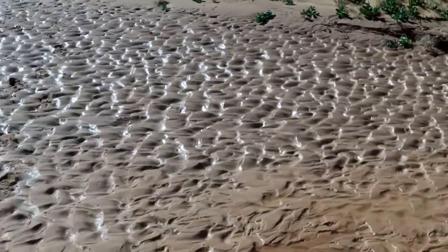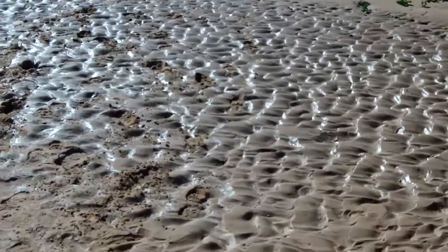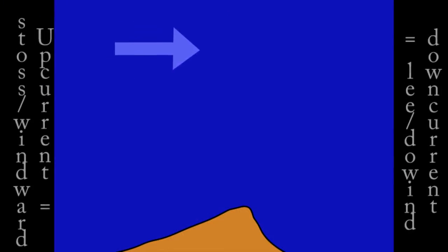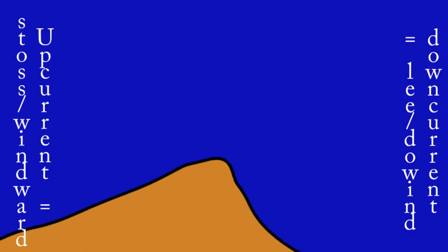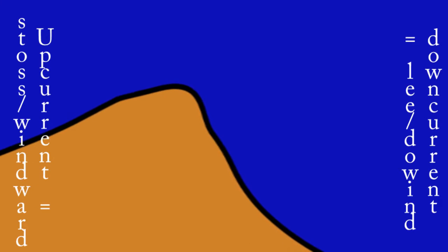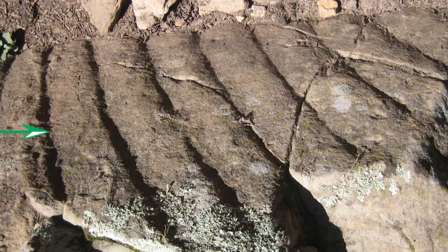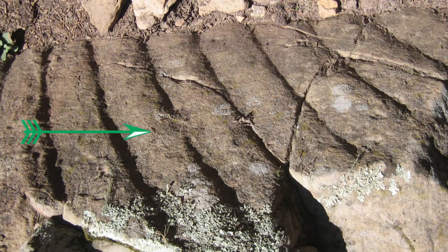Unidirectional flow creates an upwind or stoss side of the ripple or dune, which is lower in slope, leading to a downwind or lee side, which has a steeper face that cups in the direction of flow. The lee face is concave to the direction of flow, so we can tell from the shape of an asymmetrical ripple or dune which way the water or wind was flowing — from the low slope side to the steep slope side.